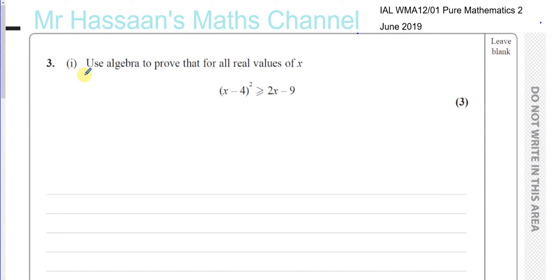Here we're asked to use algebra to prove that for all real values of x, x minus 4 squared is greater than or equal to 2x minus 9.